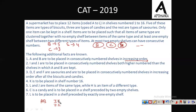Moving to the third condition: D, E and F are savouries, and have to be placed in consecutively numbered shelves in increasing order, after all biscuits and candies. So biscuits and candies come first, and savouries must be last.